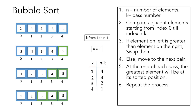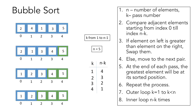One thing we can improve is to check at the end of each pass if the array is sorted, so we don't need to perform any further passes. We can do this by checking if any swap operation took place in the pass — if there are no swaps, the array is already sorted. In the entire process we use two nested loops: the outer loop for passes runs from k equal to 1 to k less than n, and the inner loop for comparisons runs n minus k times.